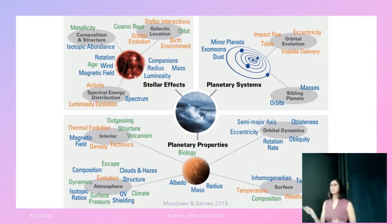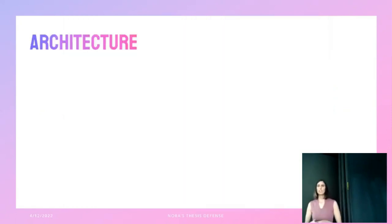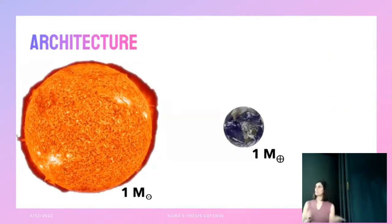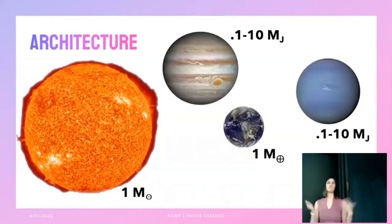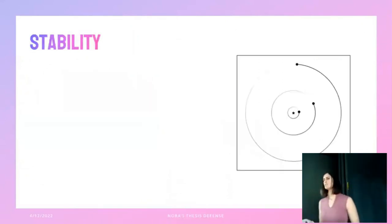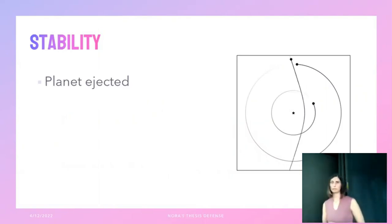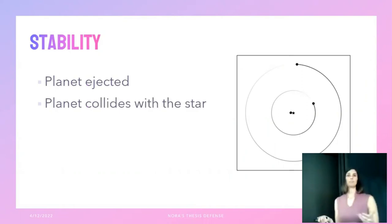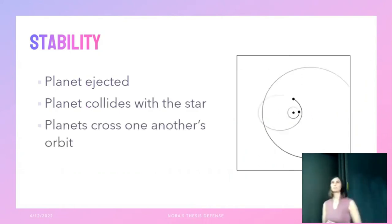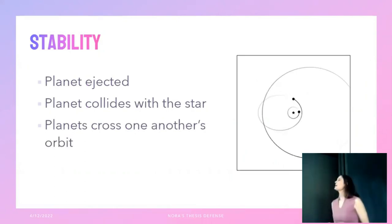Specifically I'm considering eccentricity and stability from sibling planets. I'm looking at systems with a Sun-like star, an Earth-like planet, and two giant planets of varying properties. For stability: an unstable system might have planets get ejected, a planet collide with the star, or planets crossing each other's orbits. I'll be taking orbit crossing as a marker of instability since most of the time it is.